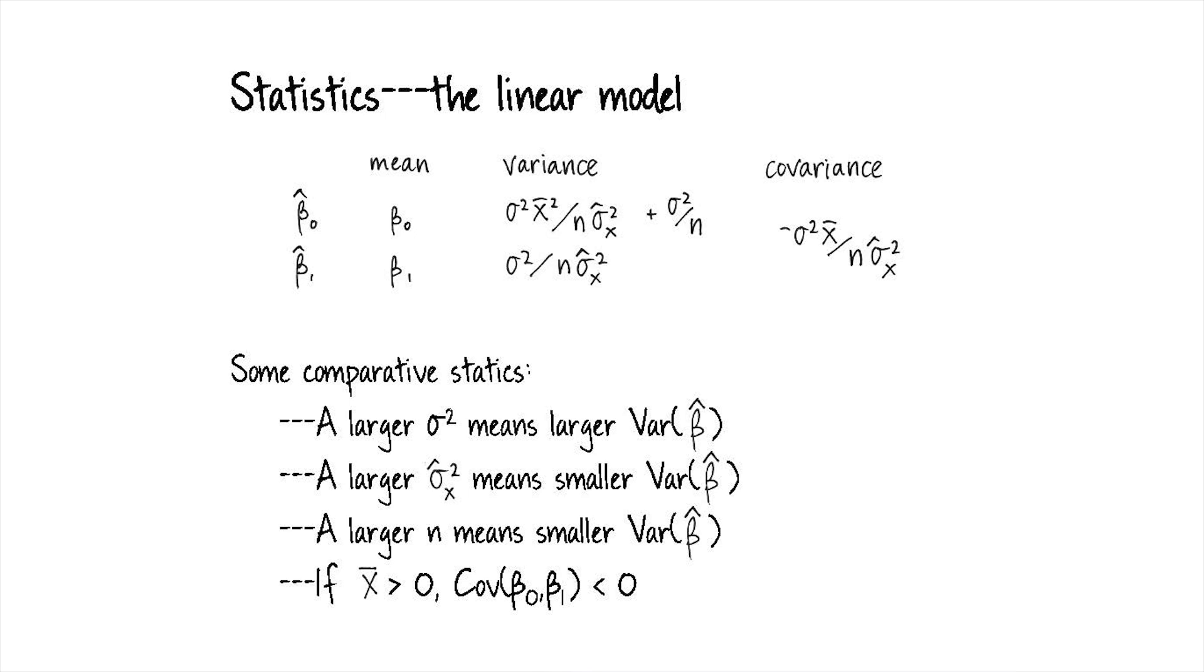And then furthermore, if the mean of x is positive, we're going to have a negative covariance, a negative relationship between β₀ and β₁. I didn't write it down here, but if x̄ is negative, then that flips. Let me show you pictures of these, and that'll make the comparative statics a little clearer.